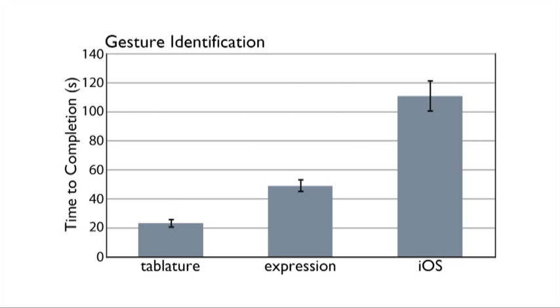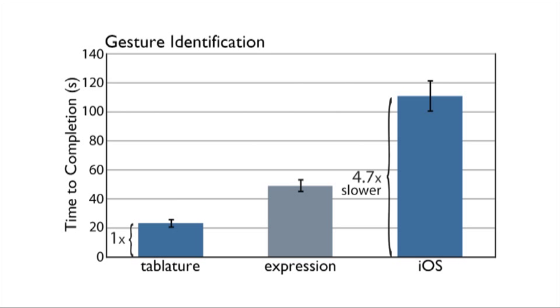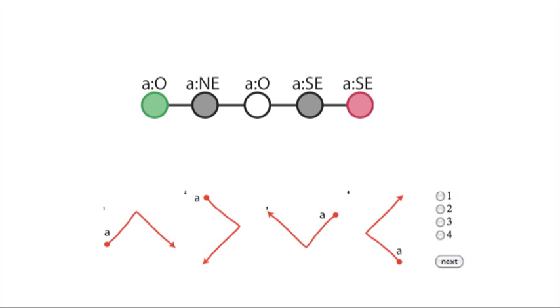Our results show that users read tablature the fastest. They were 2.1 times slower reading expressions, and 4.7 times slower reading event handling code. This suggests that tablature and regular expressions make it easier for developers to read multi-touch gestures.